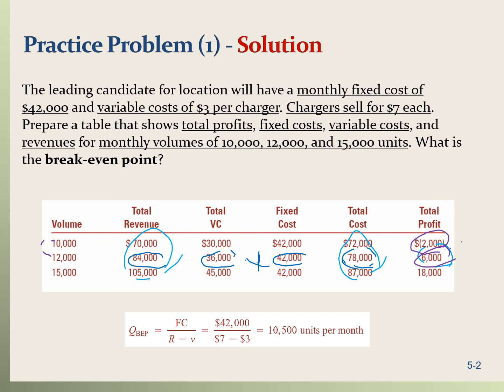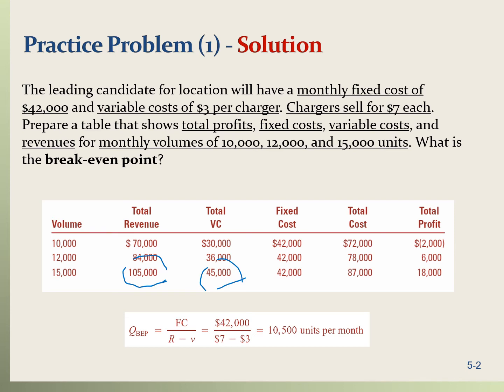So let's go to 15,000. The total revenue is $7 multiplied by 15,000, that's $105,000. Variable cost is $3 multiplied by 15,000, that's $45,000. Fixed cost is the same, $42,000. The total cost is the variable cost plus the fixed cost, that's $87,000. And the total profit is $105,000 minus $87,000, which is $18,000.